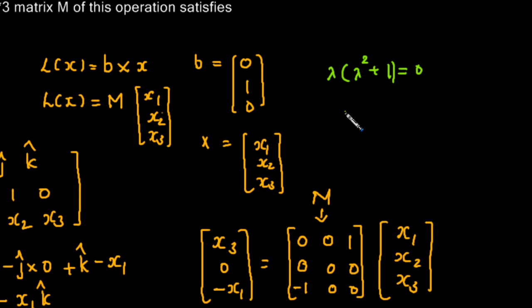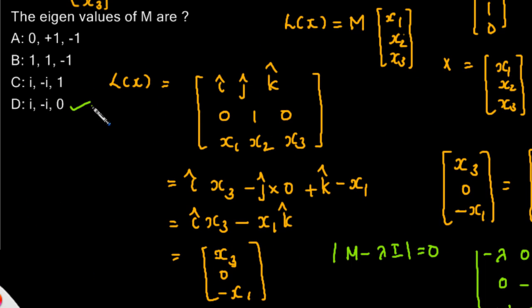Removing the negative sign, that means λ = 0 and λ² = -1, that is λ = ±i. We have found out the eigenvalues: one of the eigenvalues is 0 and the other is plus or minus i. So the correct option is option D.